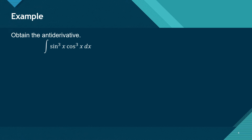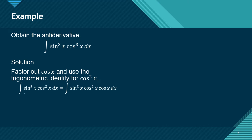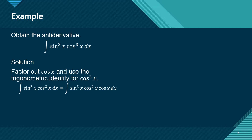Now let us get the antiderivative of the cube of sine of x times the cube of cosine of x dx. What you do is factor out one cosine. When you factor out one cosine you will be left with the square of cosine of x, and then we will use the Pythagorean identity for the square of cosine of x.